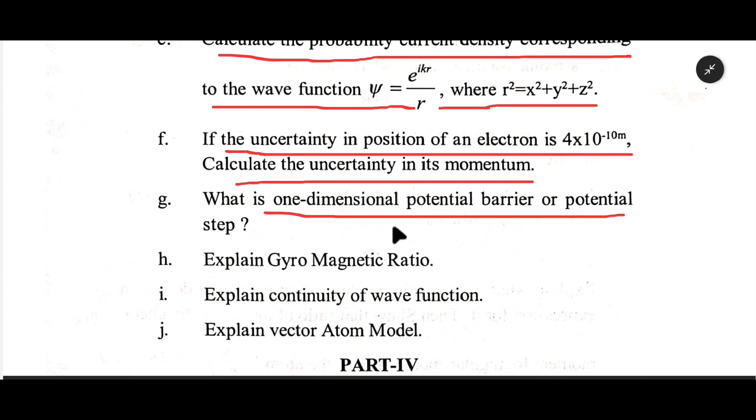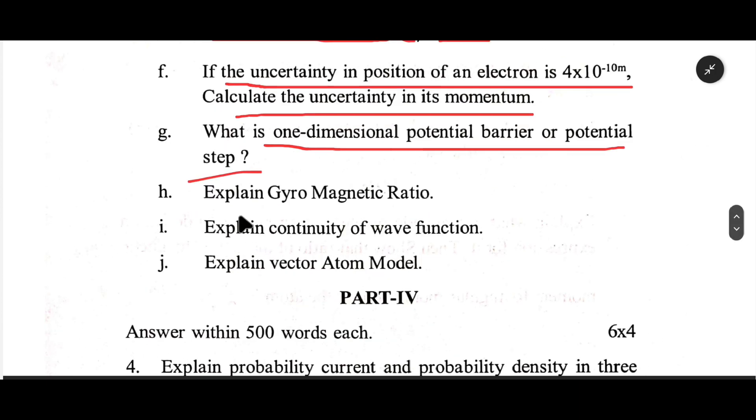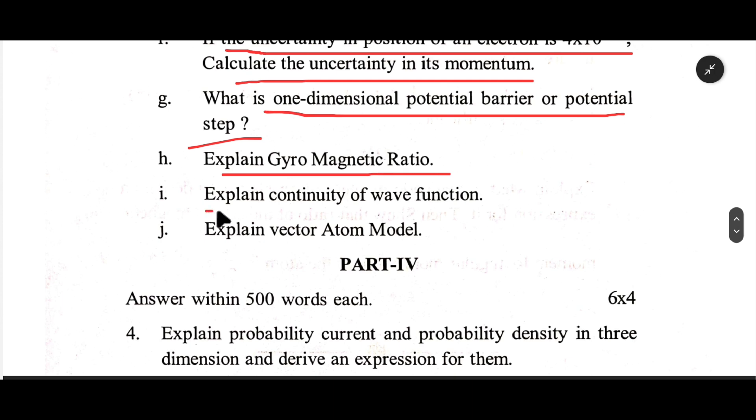calculate the uncertainty in its momentum. g. What is one-dimensional potential barrier or potential step? h. Explain gyromagnetic ratio.